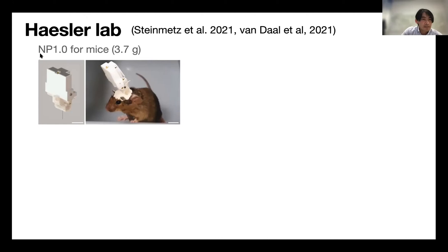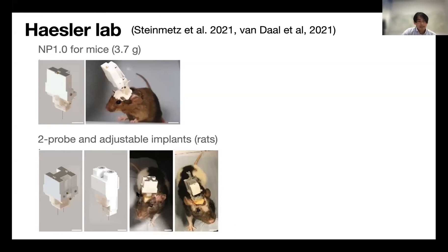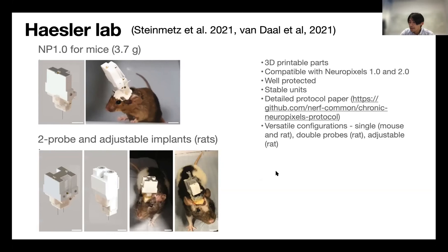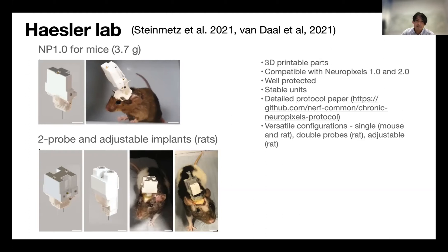The data shown uses Neuropixels 2.0 probes, but this system is compatible with Neuropixels 1.0 as well. With Neuropixels 1.0, the overall weight of the implant is 3.7 grams, so it is compatible with mice. In addition, they designed a two-probe version as well as an adjustable version, primarily intended for rats. In summary, the Haesler lab design uses 3D printed parts, is compatible with both 1.0 and 2.0 probes, is well protected, produces stable units, and comes with detailed protocol papers and CAD files.